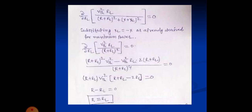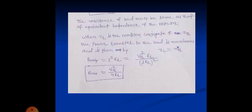That means the resistance of load must be same as that of equivalent impedance of the network. When ZL is the complex conjugate of ZTH, the power transfer to the load is maximum and given by ZL equal to complex conjugate of ZTH equal to R minus j of X.